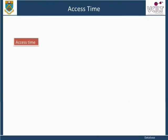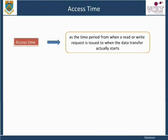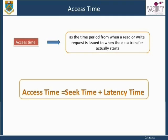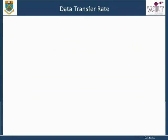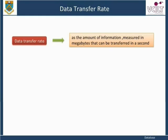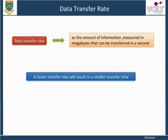Access time is defined as the time period from when a read or write request is issued to when the data transfer actually starts. The data transfer rate is defined as the amount of information, measured in megabytes, that can be transferred in a second. A faster transfer rate will result in a smaller transfer time.